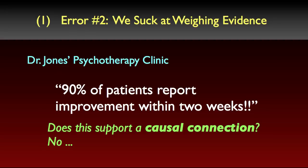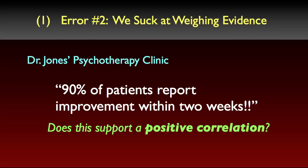But what if I ask this question: does the evidence even support the weaker claim of a correlation? Does the fact that 90% of patients report improvement support the claim that there's at least a correlation between Dr. Jones' treatments and improvement in their condition — meaning you're statistically more likely to report improvement if you go to Dr. Jones than if you didn't seek out treatment? Almost all of my science students will say that the evidence supports some kind of positive correlation, and more than half will say it's 90% or close to 90%. Would you be surprised to hear that this evidence doesn't even support a claim of correlation at all? In fact, it gives us no reason to think there's any correlation whatsoever, much less a 90% correlation.